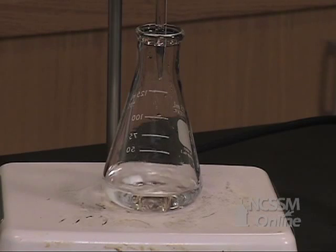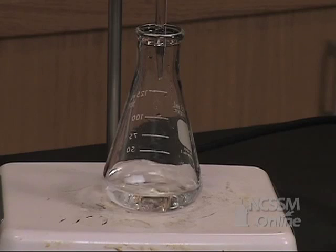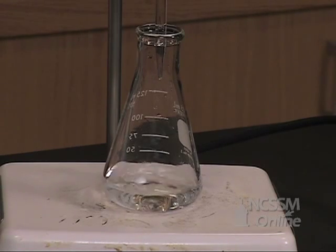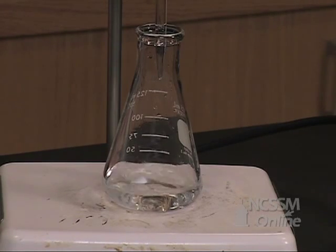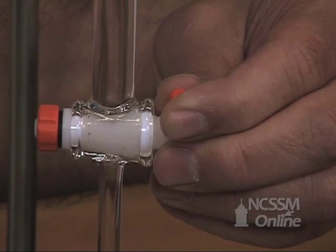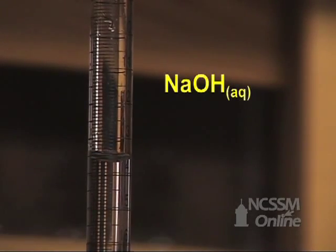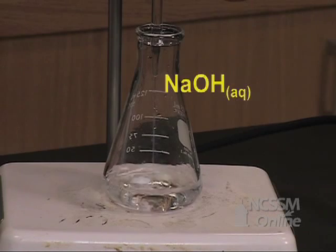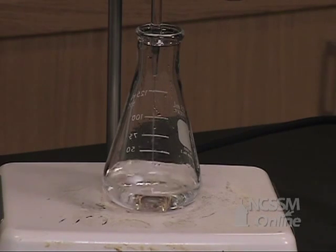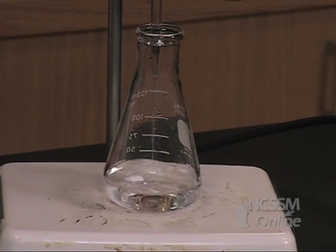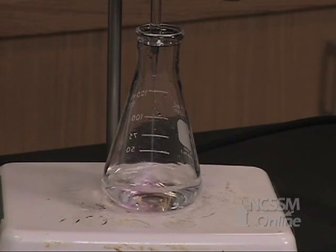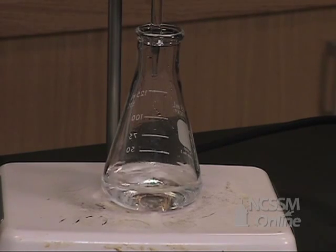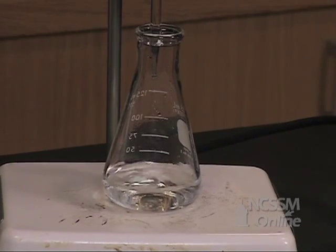We are going to titrate our samples until they turn a pale pink color. You will take an initial burette reading as is normal in any titration. You should be able to read the burette to the nearest hundredth of a milliliter. We are going to slowly add the sodium hydroxide solution. The sodium hydroxide solution will react with both the HCl and the acetic acid. When we reach the pale pink endpoint, the number of moles of sodium hydroxide added will be equal to the total number of moles of HCl plus moles of acetic acid.